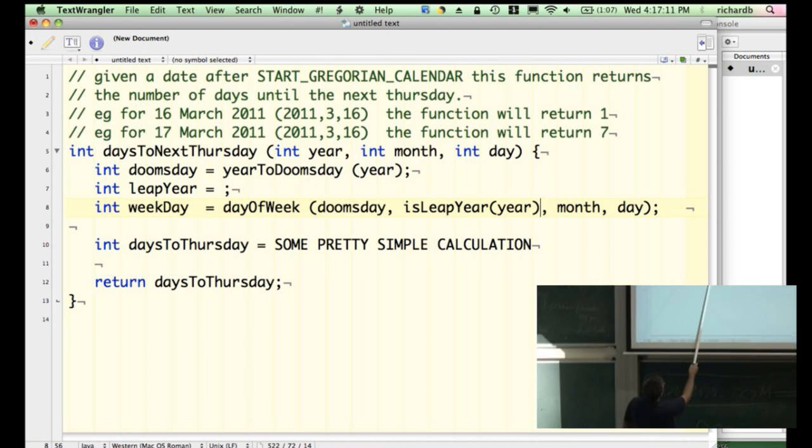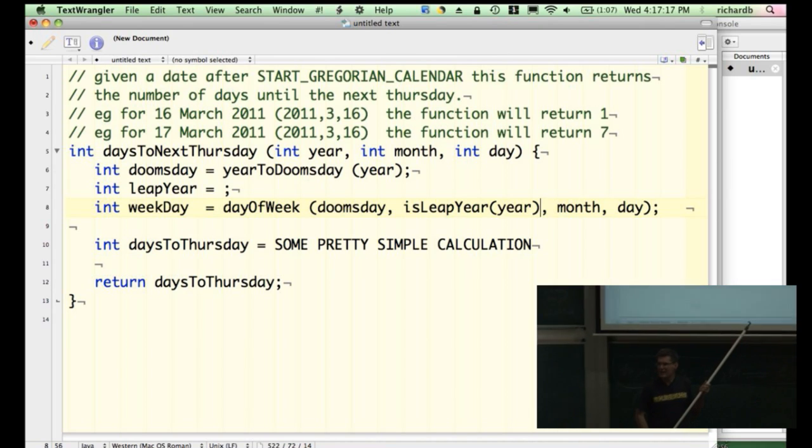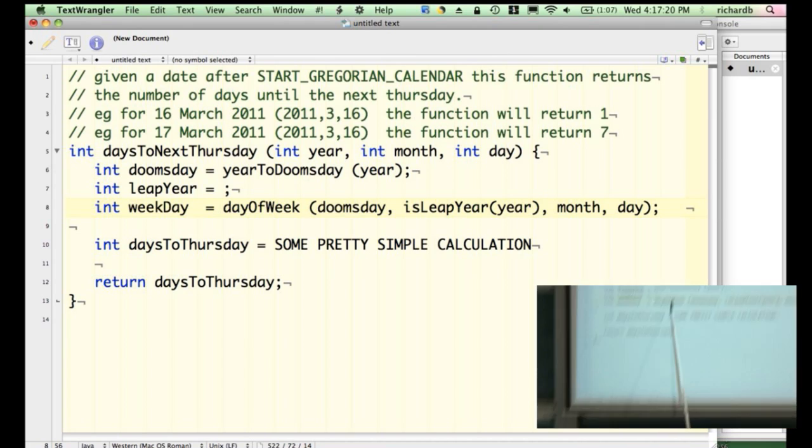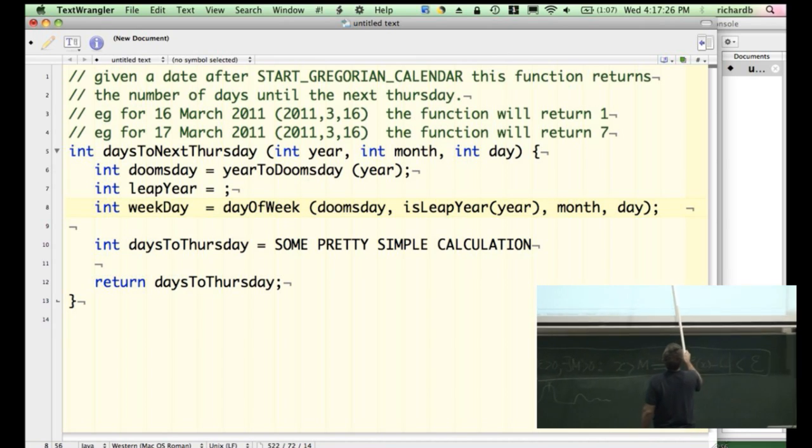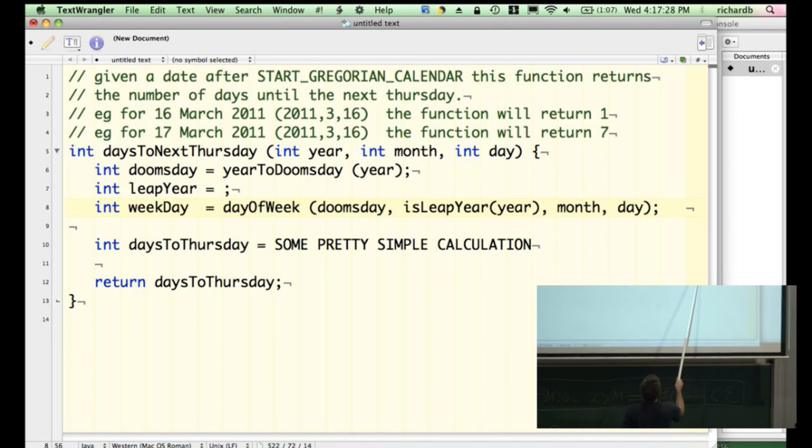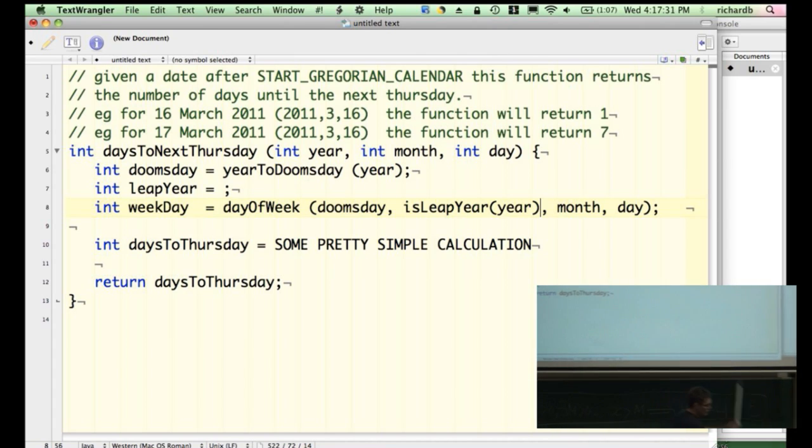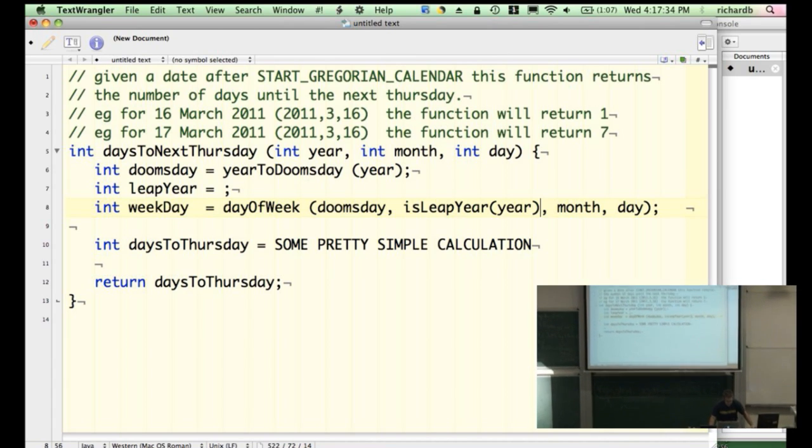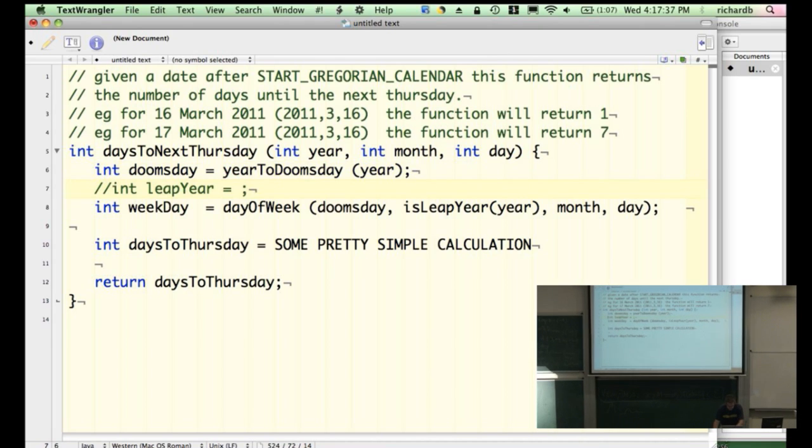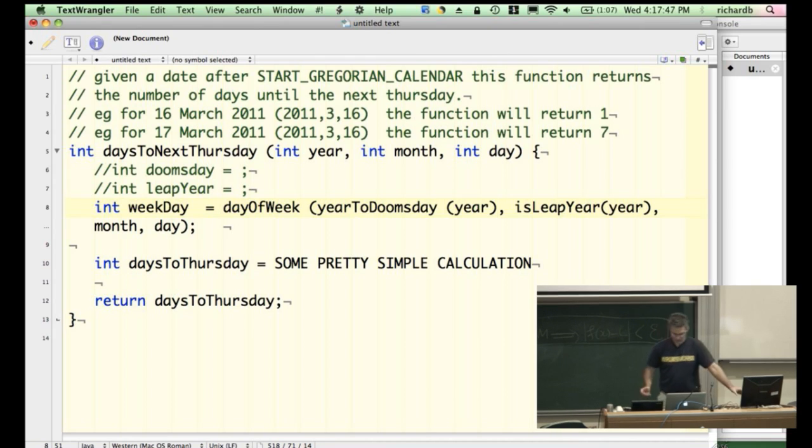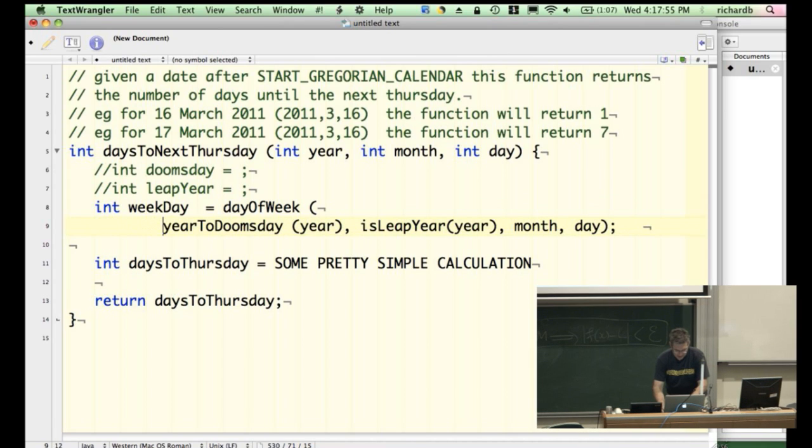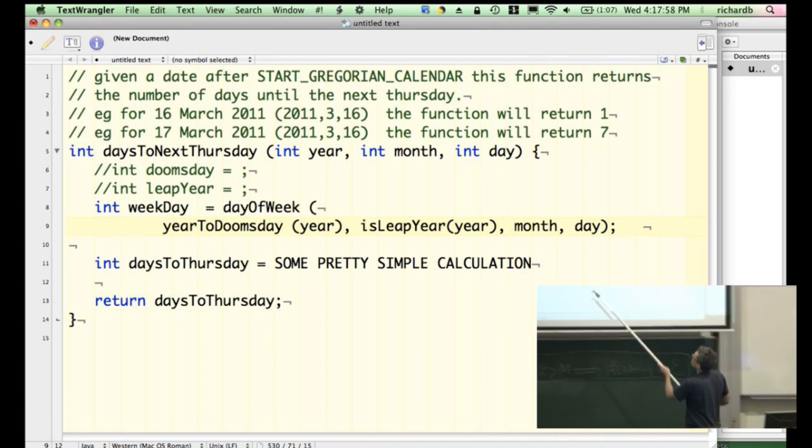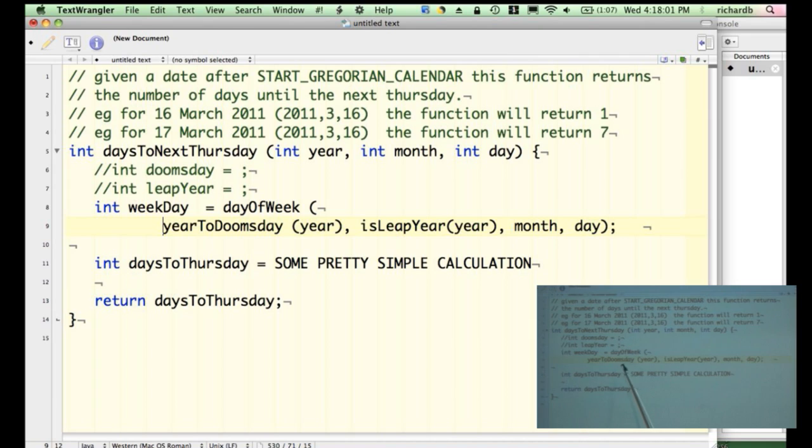So for example, we could stick yearToDoomsday in here, but actually I find that less clear. Here, this line as I read it now more or less reads in English like what it's doing. I want to know the day of the week given the doomsday, given is the year a leap year, given a month and given a day. But if I also stuck the yearToDoomsday thing in, if I just went nuts with this idea of saving space, now look at what we've got. We've got a very long line. Already I'm a bit worried about that. But now on dayOfWeek given yearToDoomsday of year, that's actually a roundabout way of saying the doomsday. I felt it was clearer when the word doomsday was there, given the doomsday, not given the yearToDoomsday of the year.